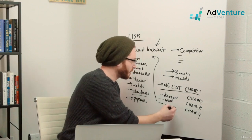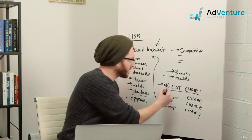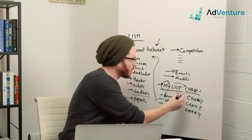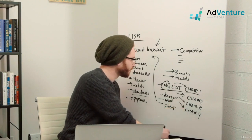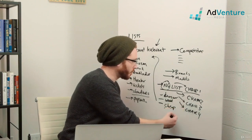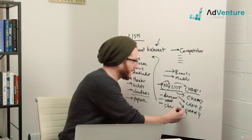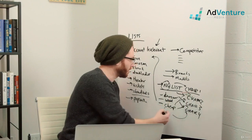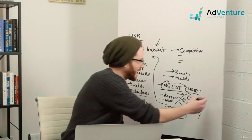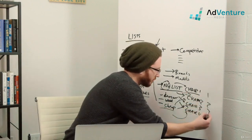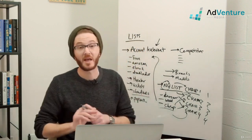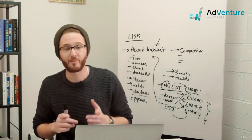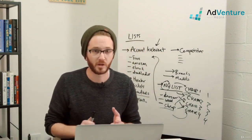If I add 'cheap' to the list, and this negative keyword list was already applied to four campaigns, then 'cheap' will be applied as a negative keyword to all four campaigns right away. All I need to do is add it once to my list instead of having to add it four times to each individual campaign. That's the power of negative keyword lists — it's the best way of using negative keywords.